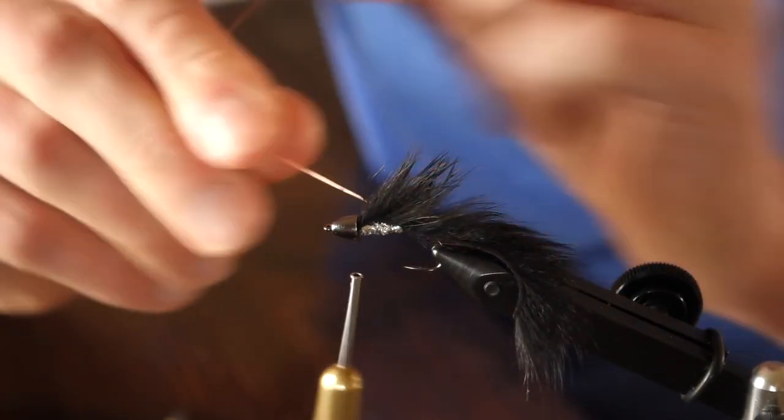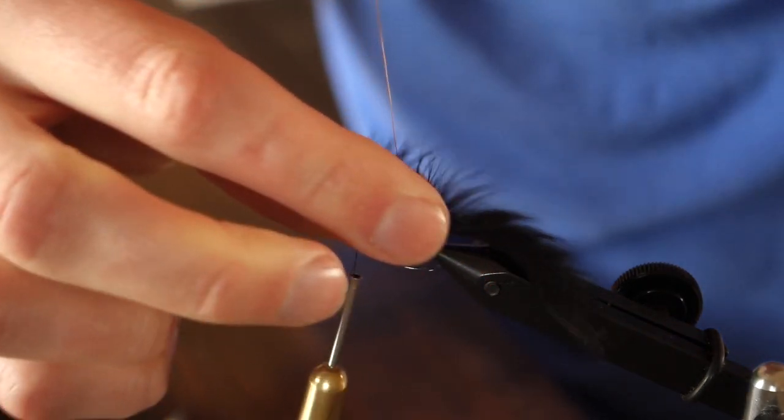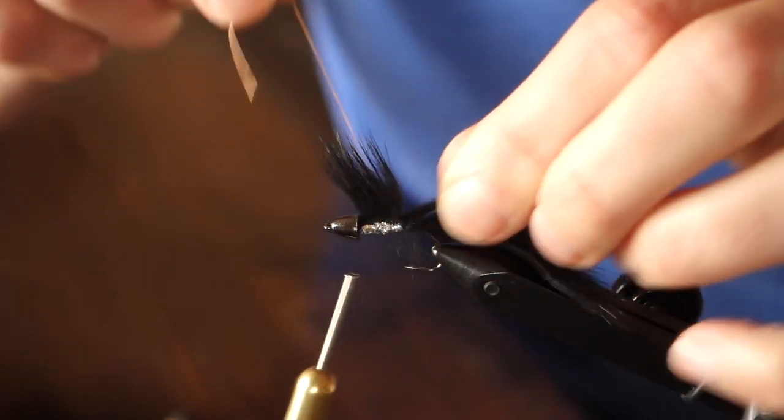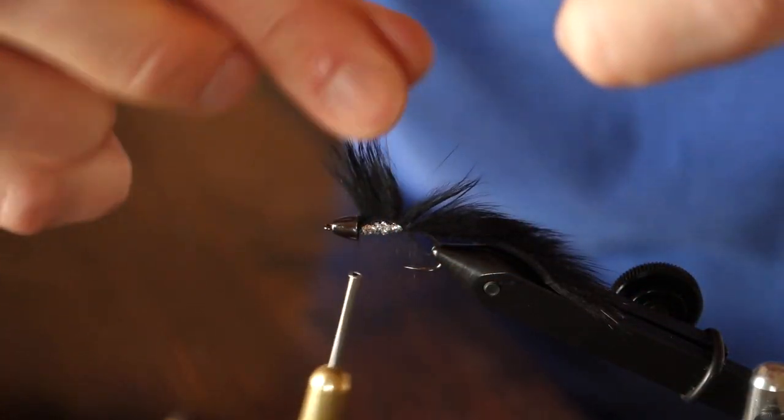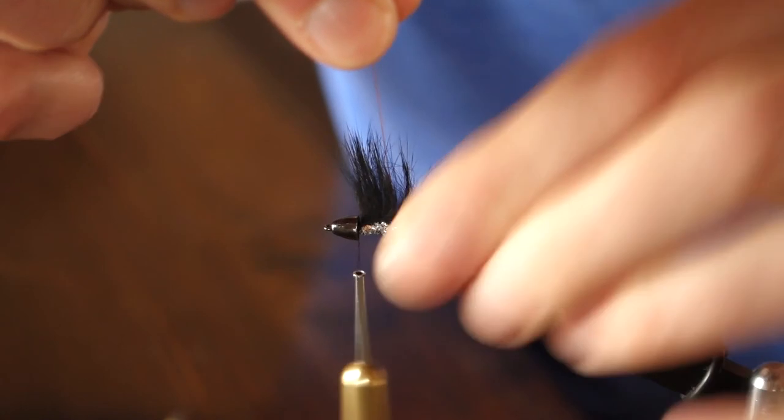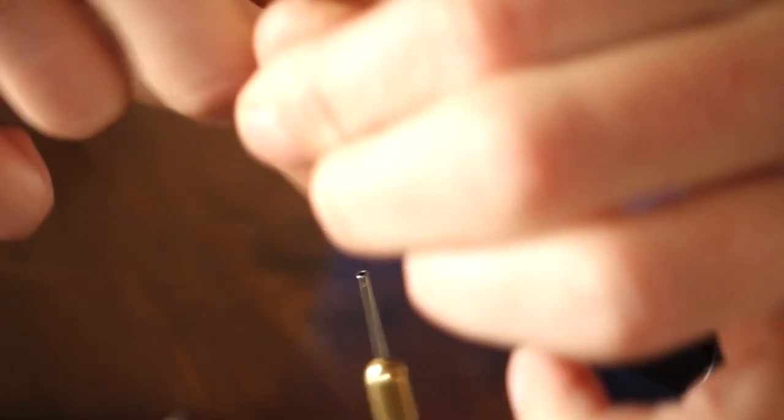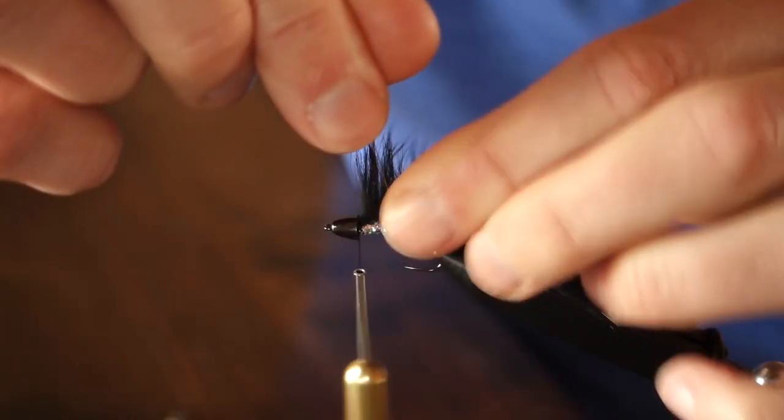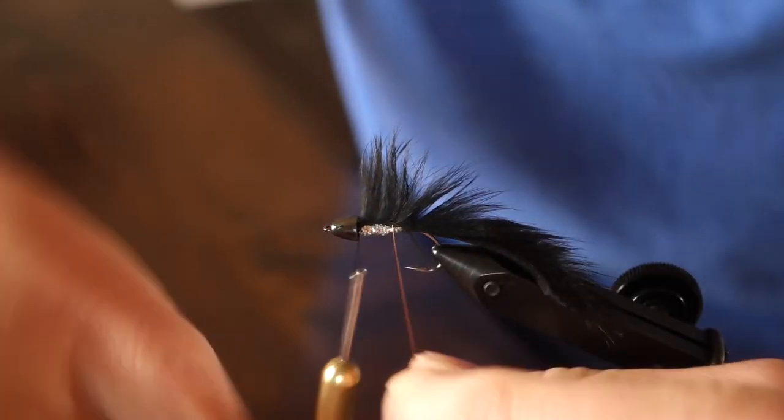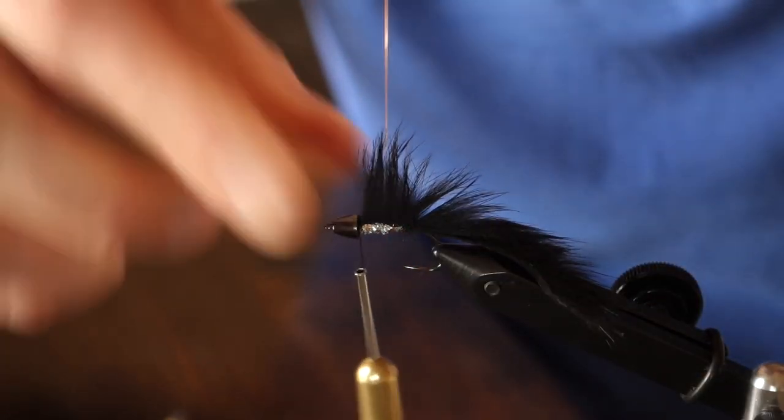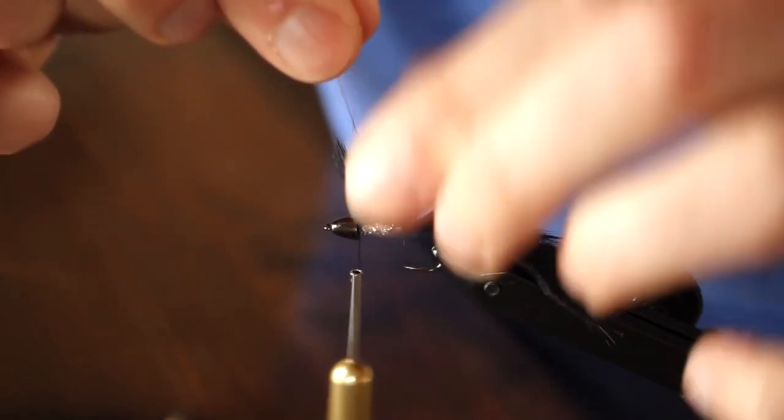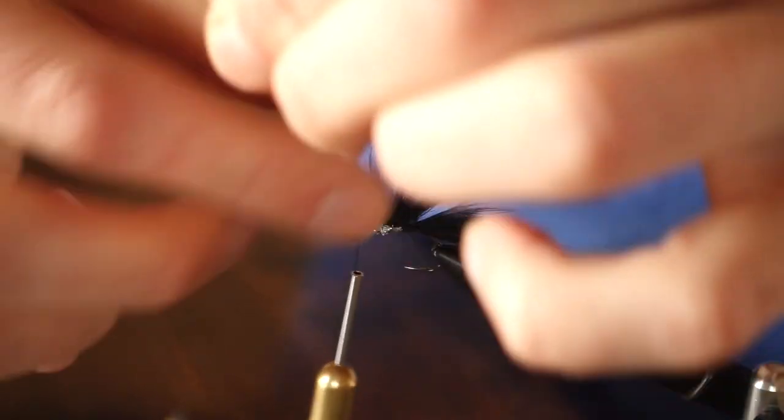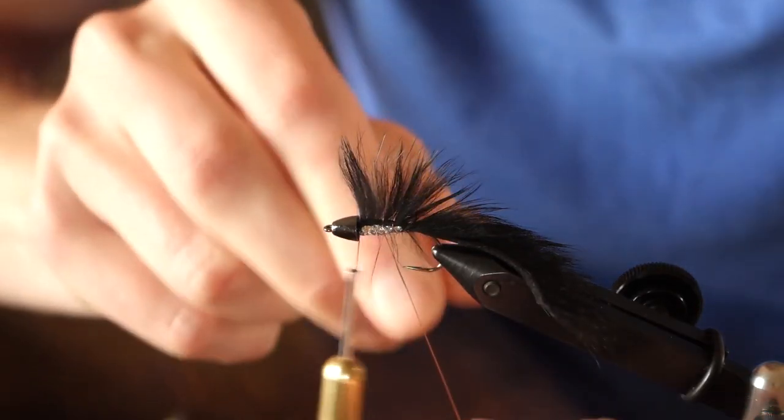Now I'm going to begin wrapping that copper wire back up the fly. This is just ribbing for it, essentially, and helps to ensure that if the strip were to get nicked by some fish teeth it wouldn't come completely loose from the hook. Just take your time working it through so you don't push too many fibers down as you wrap this wire through. You should have a good mohawk when you're finished.